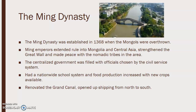We'll start with the Ming dynasty. They were established in 1368 after the Mongols were overthrown. Ming emperors extended their rule into Mongolia and into Central Asia, which strengthened their Great Wall. They would make peace with the nomadic tribes in the north. The centralized government would be filled with officials chosen by the civil service system, which has been a staple in Chinese culture, so you'd have your most talented people in government, not just by birthright.